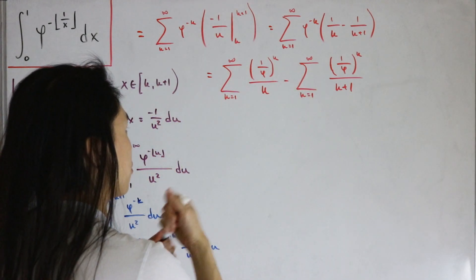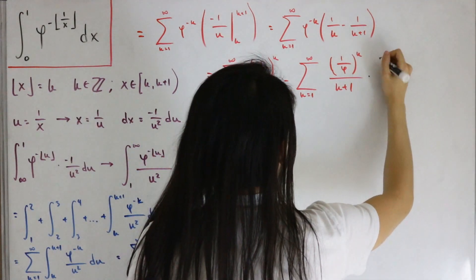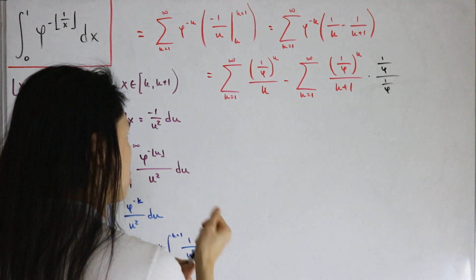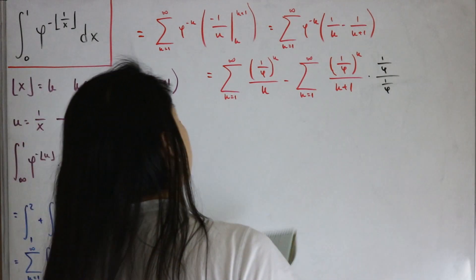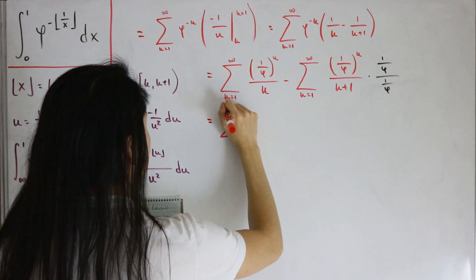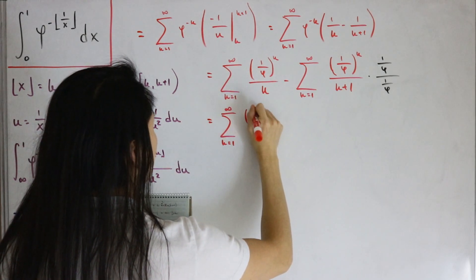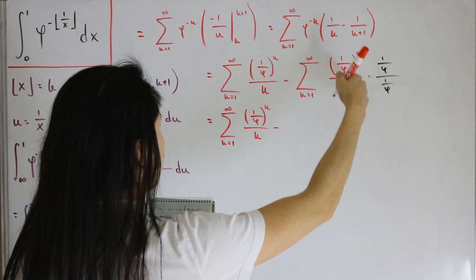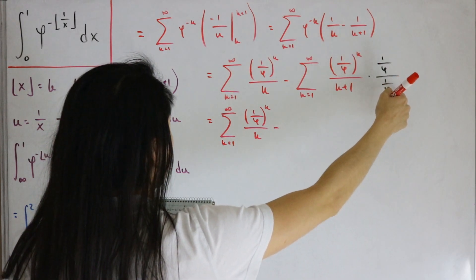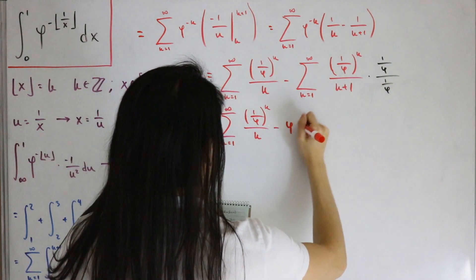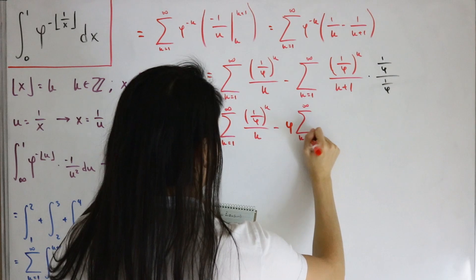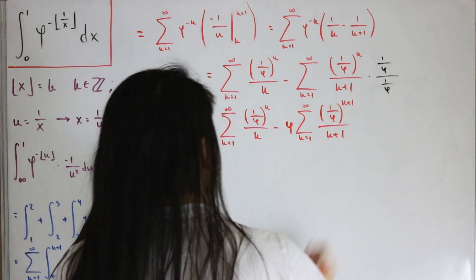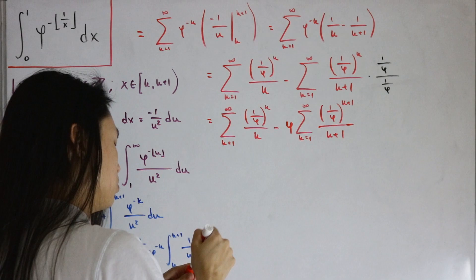For the second sum, I'll multiply and divide by 1/φ — you'll see why in a moment. Adding +1 to the exponent in the base and pulling φ as a constant outside, that second sum becomes φ times the infinite sum from k=1 to infinity of (1/φ)^(k+1) / (k+1). This sets us up nicely for the Taylor series substitution.